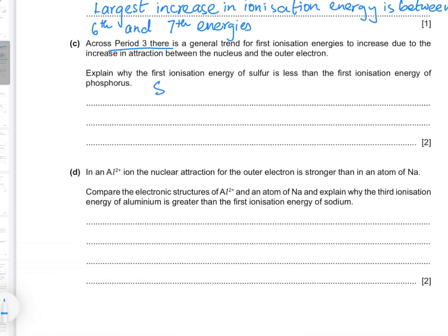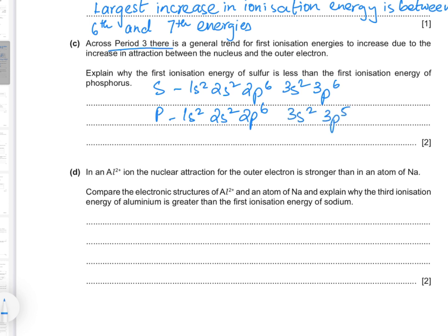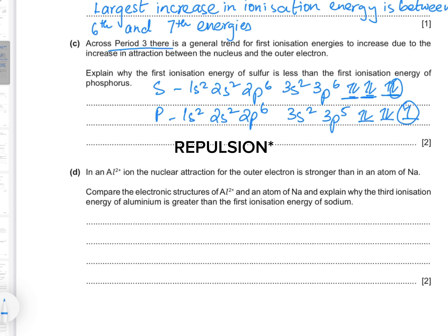Let me write down the electronic configurations of sulfur and phosphorus. Sulfur has 1s² 2s² 2p⁶ 3s² 3p⁶, whereas phosphorus has 1s² 2s² 2p⁶ 3s² 3p³. In sulfur, all three p orbitals are fully occupied with two electrons each. When removing the first electron from sulfur, less energy is required because of spin-pair repulsion between the two electrons in the same orbital, which decreases the ionization energy. This is why sulfur doesn't follow the trend in Period 3.